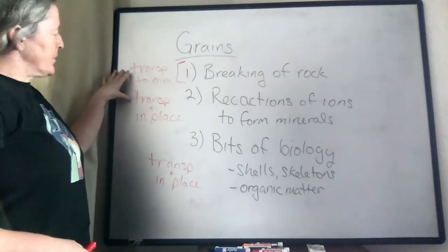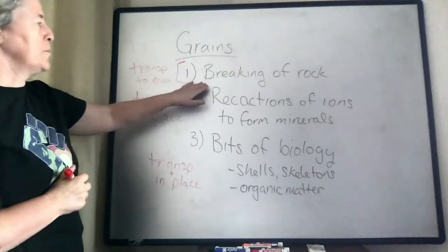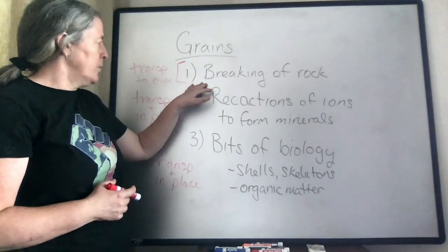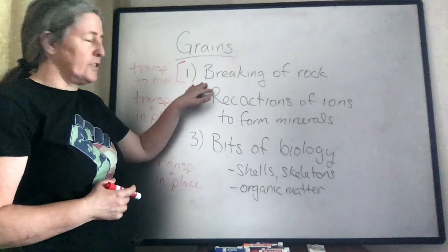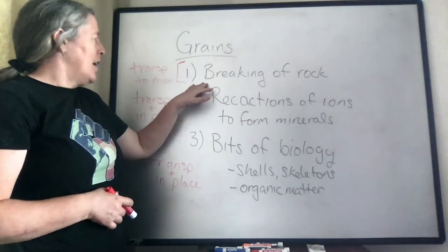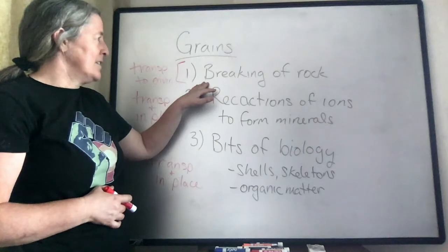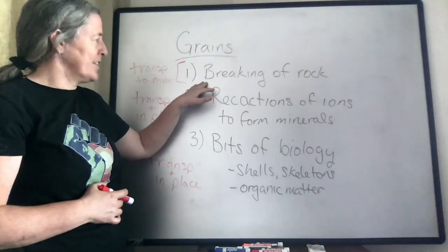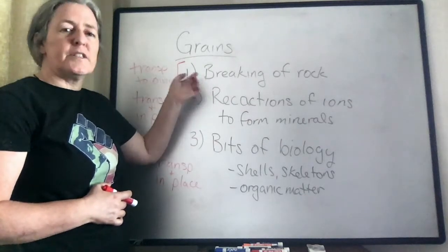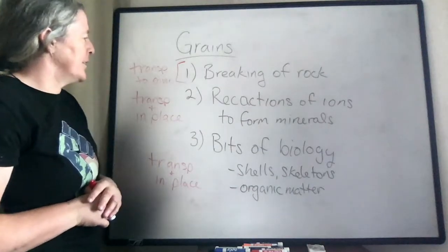If grains are transported, they can tell you something about where those grains came from. For example, if you're breaking up a rock from the Sierra Nevada, which has intrusive igneous rocks, there are minerals called zircons in those. They can be transported down the rivers and eventually found by geologists and characterized. They will retain a fingerprint of where they came from — those granitic rocks in the Sierra Nevada mountains.